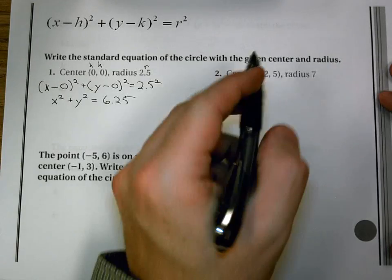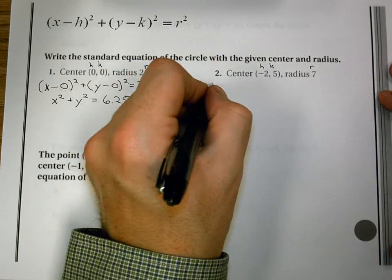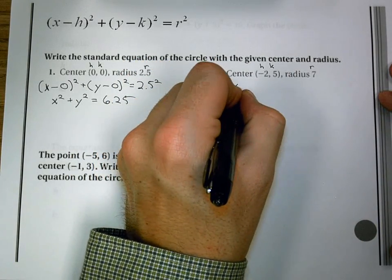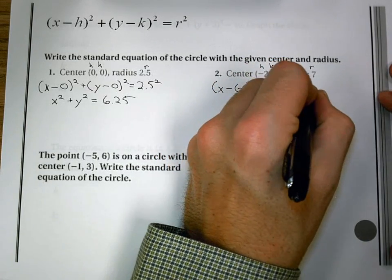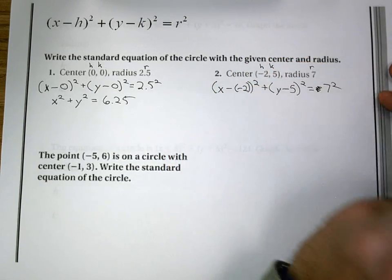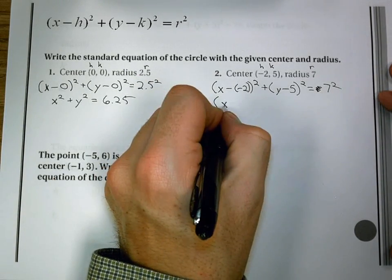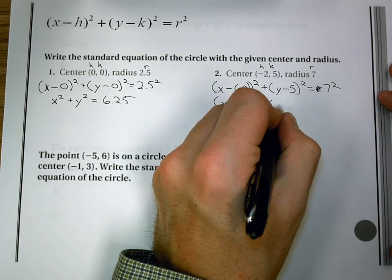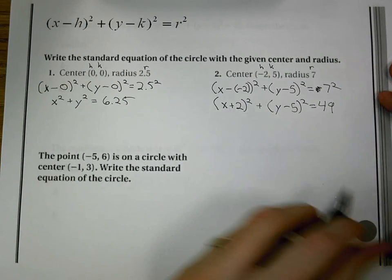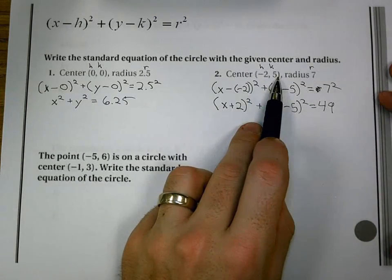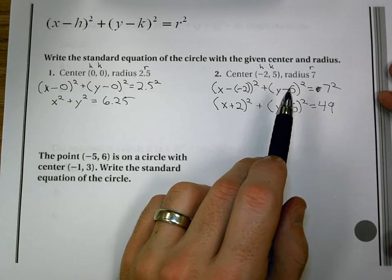Next one, I have (-2,5). So that's (h,k). And r is 7. So I'm going to say (x-(-2))² + (y-5)² = 7². Well, minus a negative becomes positive. So (x+2)² + (y-5)² = 49. So (-2,5) becomes positive 2, negative 5 within the equation. Then if I was going to take them out, I would do the opposite again.